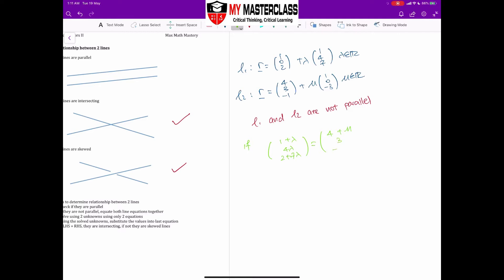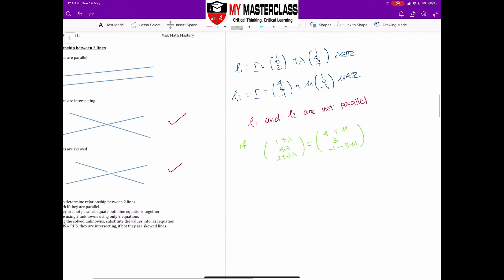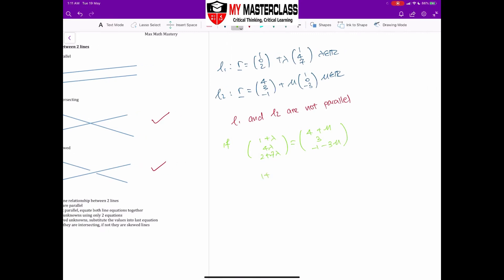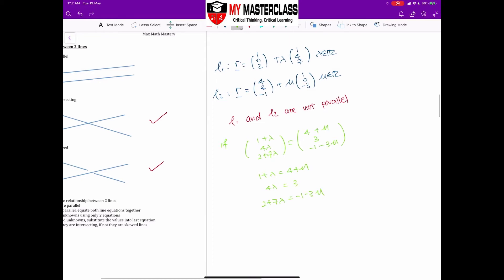By doing this, I'm assuming that line 1 and line 2 intersect. And I can actually create three different equations by comparing the x component, the y component, and your z component. Next, note I will have three equations and two unknowns, which is namely your mu and lambda. So what I can do is use two of the equations out of these three to solve for my lambda or mu.